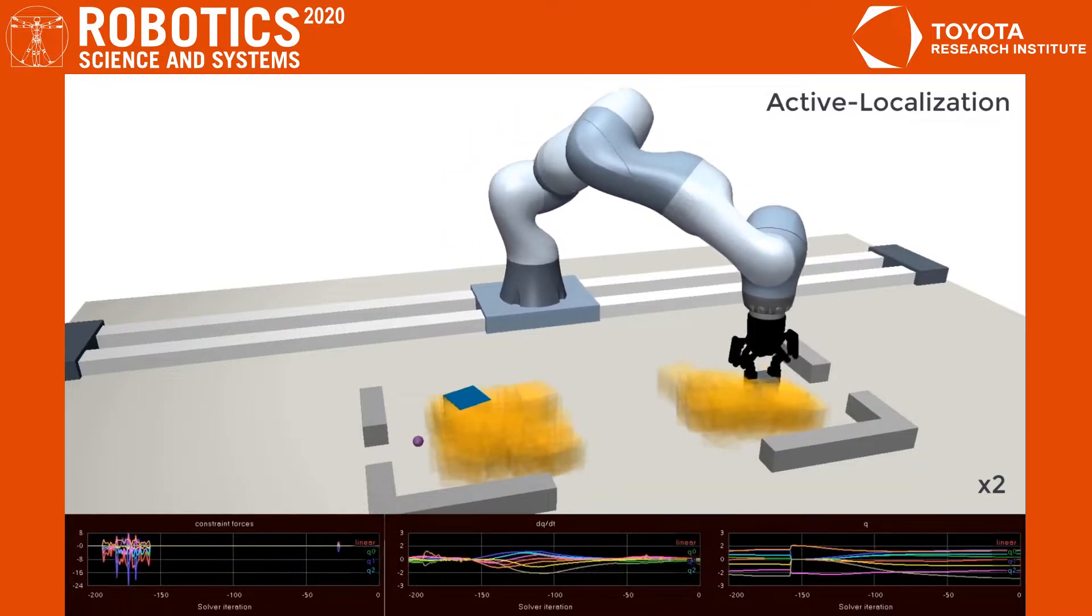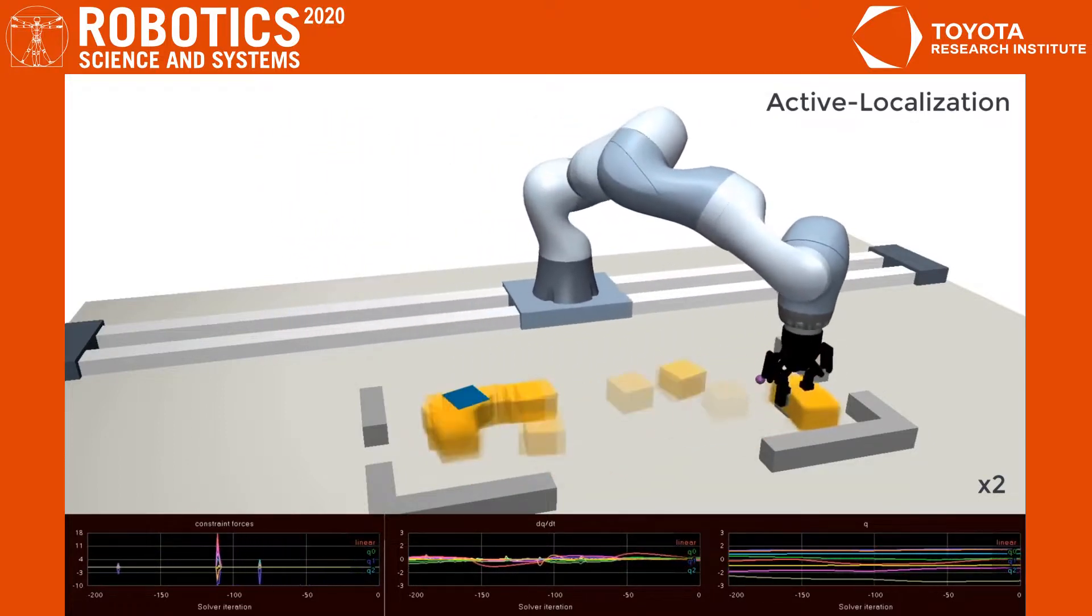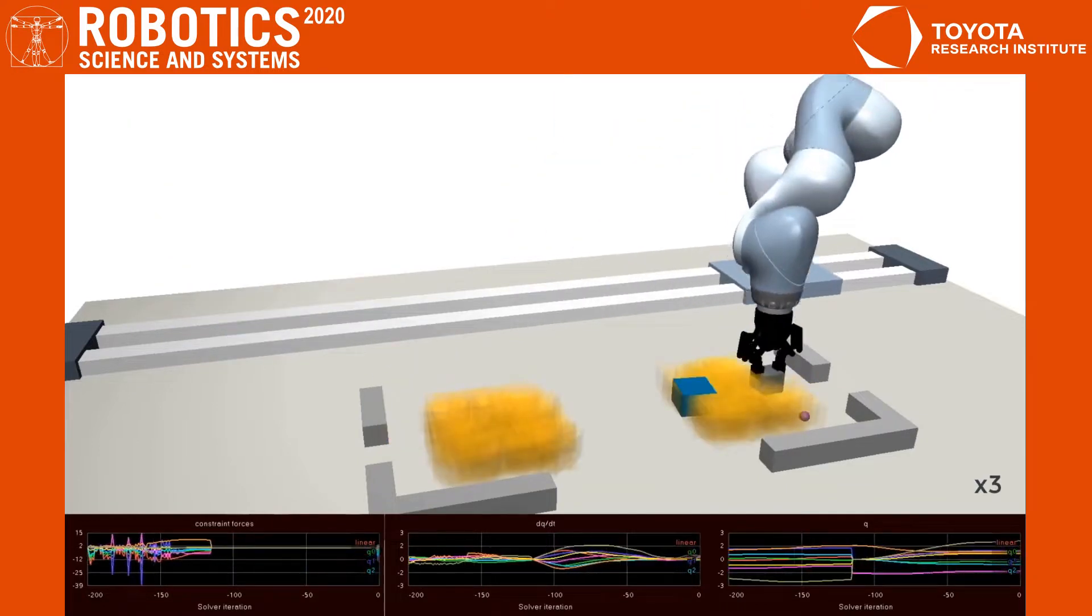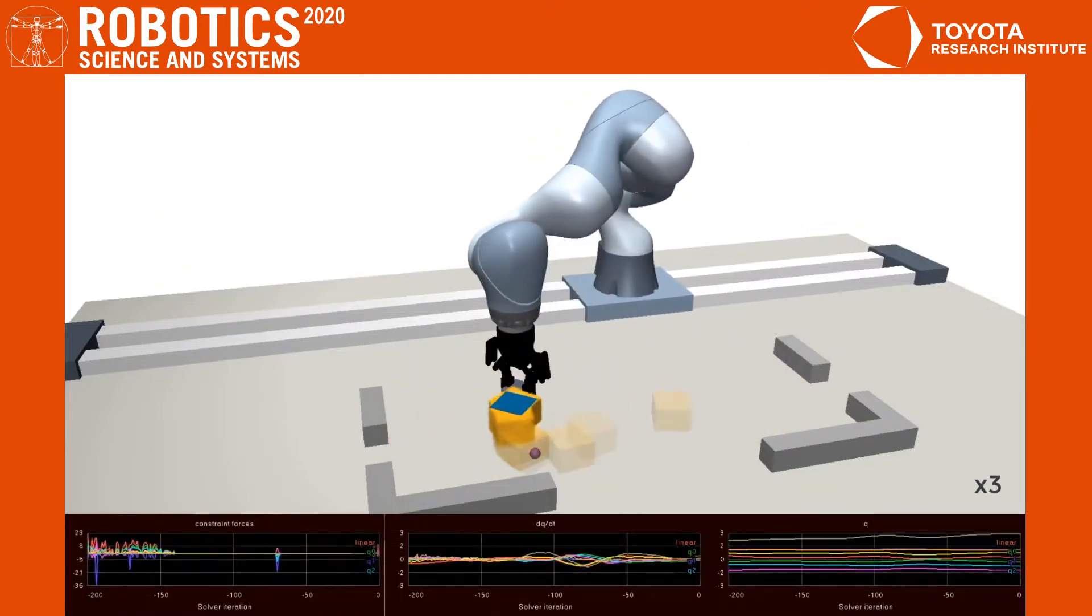In this benchmark, the goal is to quickly localize the blue cube. The robot moves quickly in the initial phase and exploits the environment geometry to condense the belief.